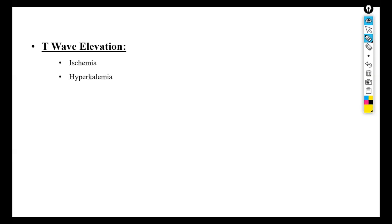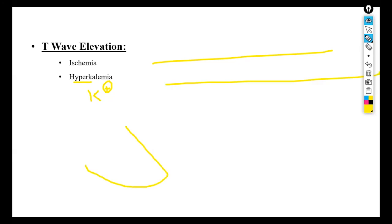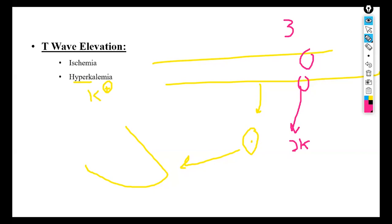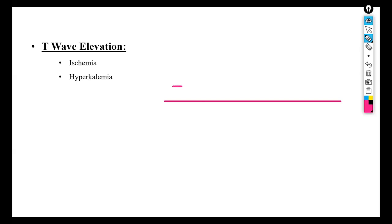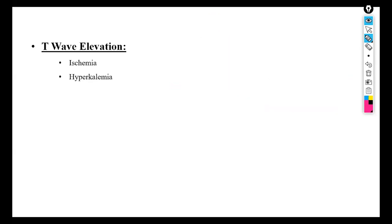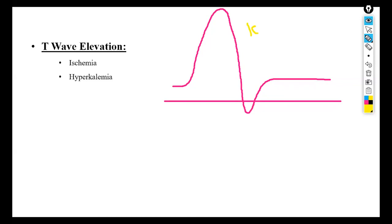T wave elevation also occurs because of hyperkalemia — excess potassium. In the cardiac cell membrane, the sodium-potassium pump exchanges two potassium ions inward and three sodium ions outward. Repolarization in the action potential is driven by potassium. When there is more potassium in the heart there is more repolarization, and more repolarization causes T wave elevation.